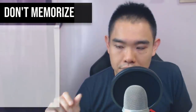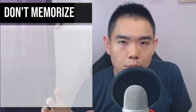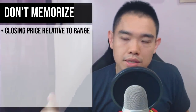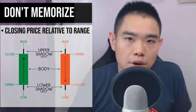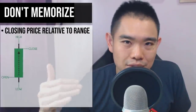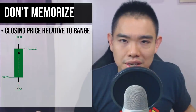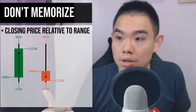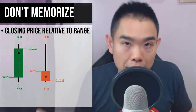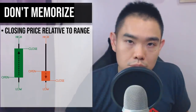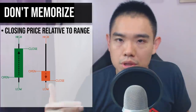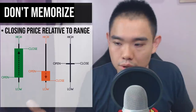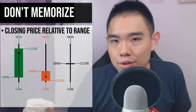The first thing is: where did the price close relative to the range? A candlestick pattern has the open, high, low, and close. If the candle closed near the highs of the range, it's a bullish sign — the buyers are temporarily in control. If the price closes in the lower end of the range, the sellers are temporarily in control. And if the candle closed in the middle of the range, it's undecided — buyers and sellers are pretty much in equilibrium.